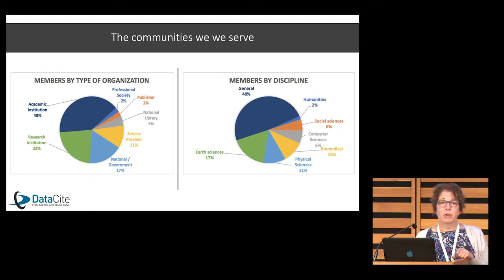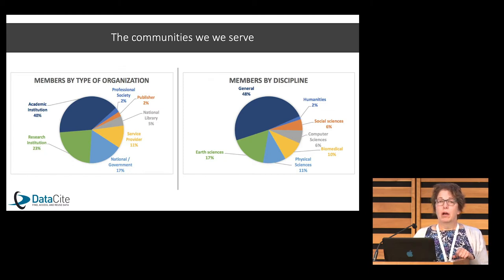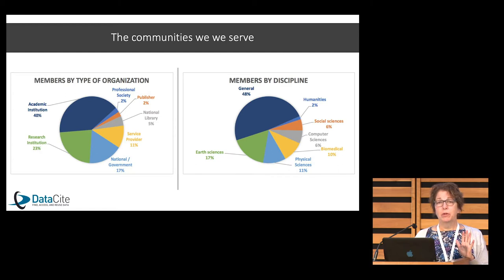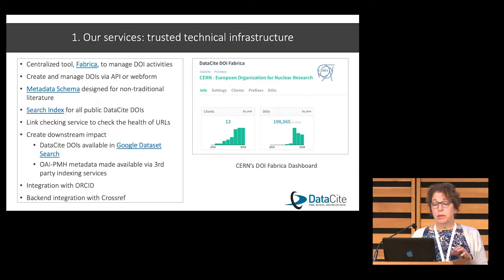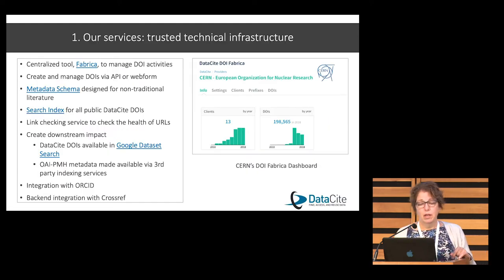DataCite is involved in helping with the NIH Data Commons to think about what globally unique identifiers look like. The differences between Crossref and DataCite are really about the communities we serve, but also our services. The first thing is technical infrastructure.